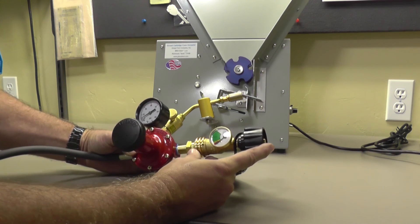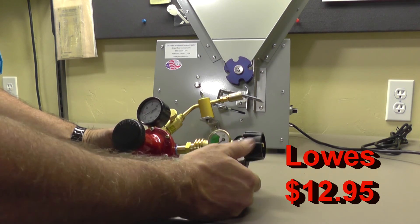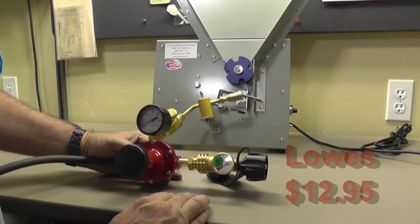Then the last piece, the tank gauge with the tool-less adapter was $12.95 from Lowe's.